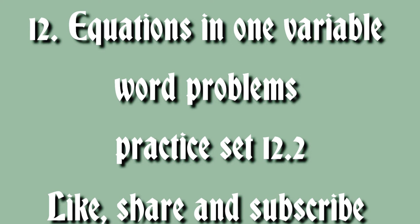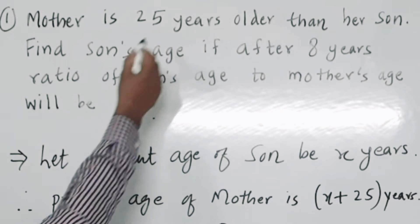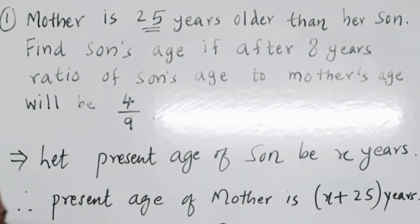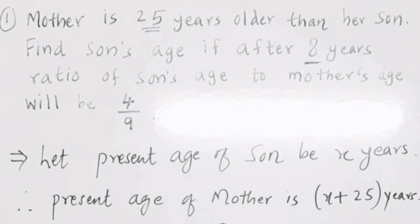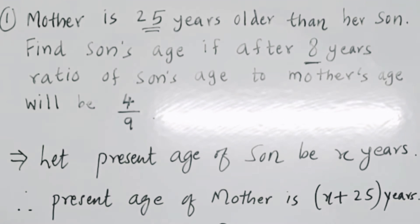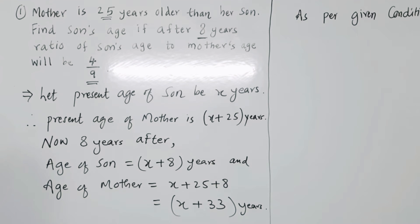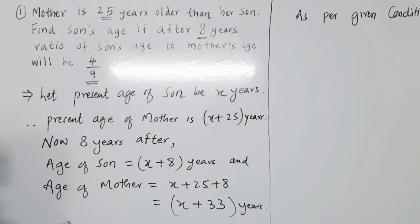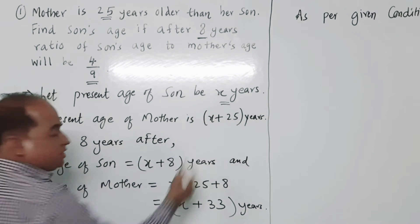First example: Mother is 25 years older than her son. Find the son's age if after 8 years the ratio of the son's age to the mother's age will be 4 upon 9. So let us consider — we have to find the age of the son. Let the present age of the son be x years.